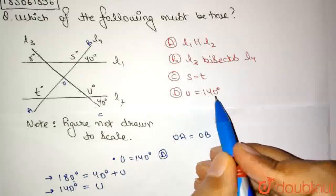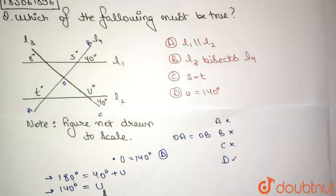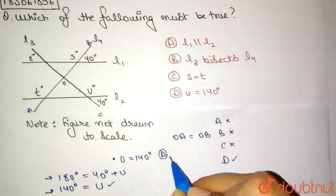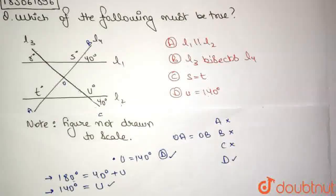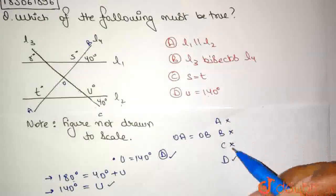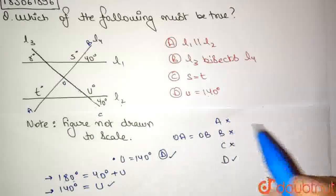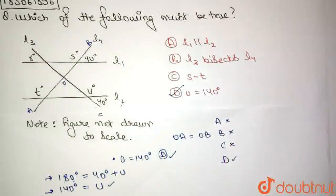Comparing the value of U that we obtain with option D, which is U equals 140 degrees, we see that option D is indeed the correct answer. We could have done it in two ways: because A, B, and C are wrong, D must be correct. And we actually solved for option D and came to the conclusion that yes, D is indeed correct. So the correct answer for this particular question is option D, which is U equals 140 degrees. That is it guys, thank you so much for watching.